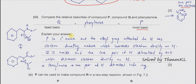To explain the ranking: P is most basic because it is a primary amine and the alkyl group attached to N has electron-donating character, which increases electron density on N, so it can donate easily. Q is least basic because the lone pair on N delocalizes into the carbonyl group, decreasing electron density on N. For phenylamine, the lone pair delocalizes into the benzene ring. Typically explaining the most basic and least basic is sufficient.